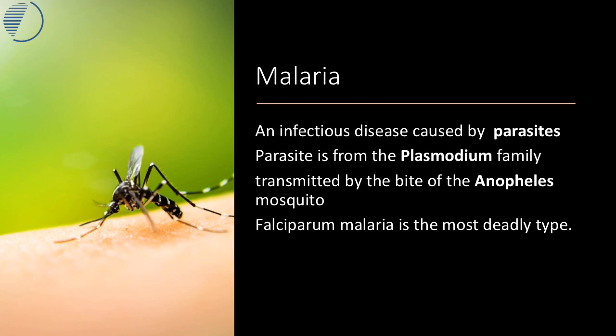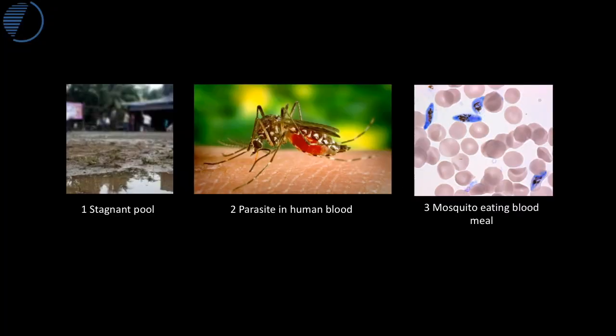Malaria is an infectious disease caused by parasites. Those parasites come from a group of organisms called the plasmodium family and are transmitted usually by a mosquito — the most common type being the Anopheles mosquito. The life cycle of the mosquito is complicated, and the life cycle of the parasite also takes place in two organisms: the mosquito and the human. It's important to understand some basics of this to understand how direct and indirect strategies to tackle this disease work.